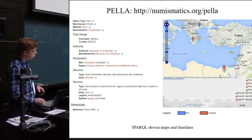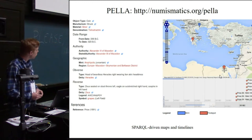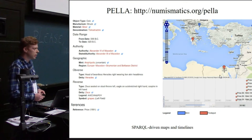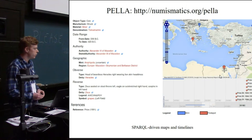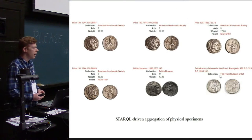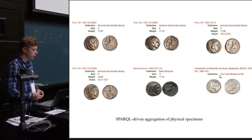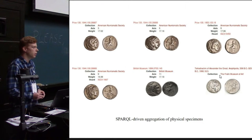This allows us to display typological information about a particular coin of Alexander the Great. On the right is a map and timeline showing the geotemporal distribution of that typology over time and space, and that's driven by SPARQL. It allows us to aggregate coins from various collections connected to that URI of that typology and harvest measurement data and geographic data for analyses.